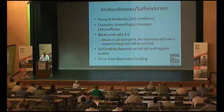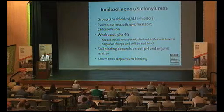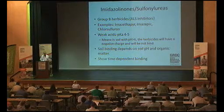The first topic is the Group B herbicides — the ALS inhibitors. There are differences between the sulfonylureas and the imidazolinones you should be aware of. All of them are weak acids with a pKa of somewhere between 4 and 5. If soil pH is greater than 6, these will be anionic with a negative charge, so they will not bind tightly to soils. Below pH 6, they bind more tightly. Their soil binding depends on both soil pH and organic matter — the lower the pH, the more tightly they bind. They also show time-dependent binding: the longer they reside in the soil, the more tightly they bind.